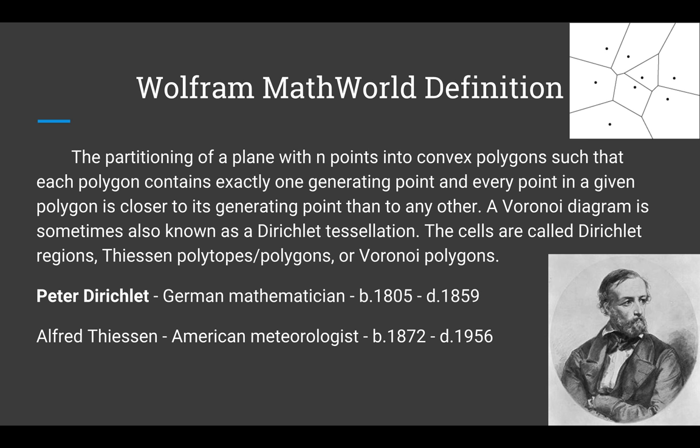This is the Wolfram MathWorld definition. The partitioning of a plane with endpoints into convex polygons such that each polygon contains exactly one generating point, and every point in the given polygon is closer to its generating point than to any other.